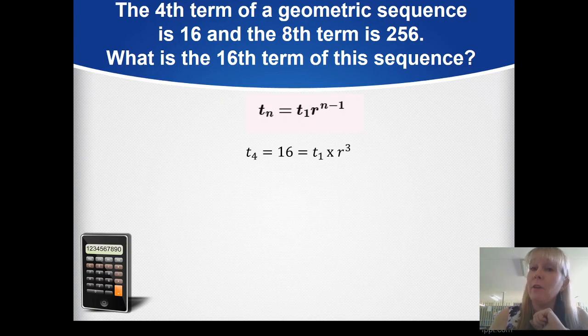From the information given, term 4 equals 16, which equals t₁ × r³. This comes from r^(n-1) where n is 4, so 4 minus 1 equals 3. The eighth term is 256, which equals t₁ × r⁷. Let's clean this up by removing the term labels, leaving us with two simultaneous equations. I'll name them equation 1 and equation 2.